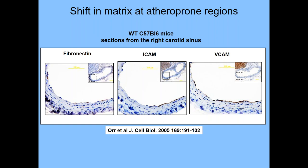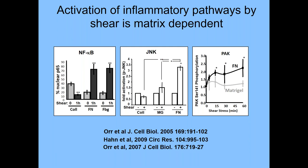Wayne took sections through arteries of wild-type mice and observed that wherever there was disturbed flow in atheroprone regions, there were endothelial inflammation markers — ICAM and VCAM — expressed in these regions. There was also fibronectin deposited beneath the endothelial cells in the same regions. He then took endothelial cells, plated them on different matrix proteins, applied shear stress, and looked at signaling outputs.